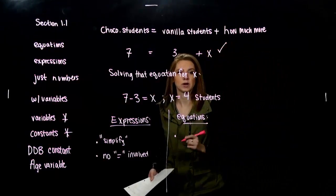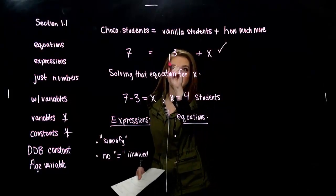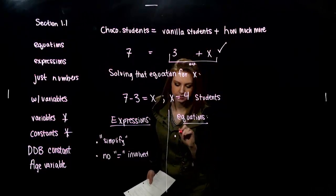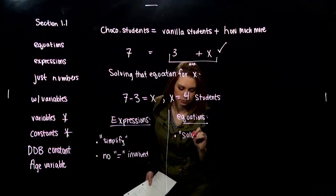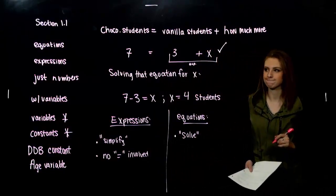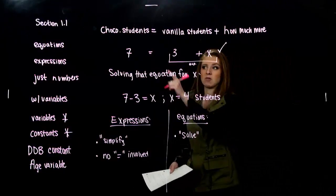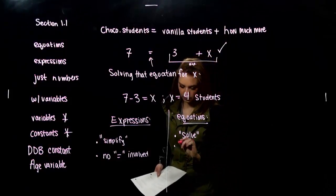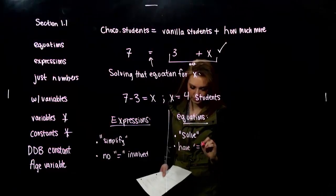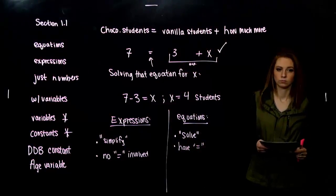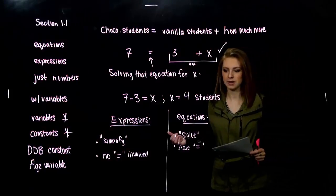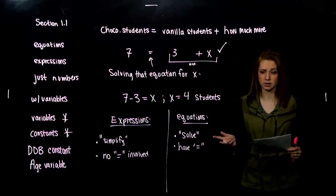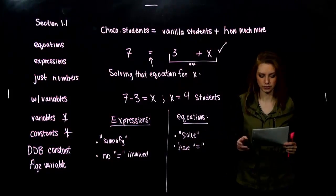But an equation we are asked to solve. This was an example of an equation, but this piece, 3 plus x, is an expression. So in this case, equations we are asked to solve for something. And whenever we're asked to solve, we're going to see an equal sign within that equation. We'll always have an equal sign. So you have to be able to tell, when am I being asked to solve for something? And when am I just being asked to simplify something? We need to know the difference between the two. That's vital to algebra.